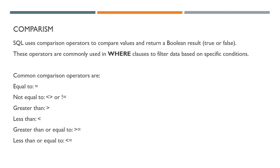We use this to filter based on specific conditions. Some common comparison operators you can actually use are: equal to, not equal (which you can write with either sign), greater than, less than, greater than or equals to, or less than or equals to. These are the basic comparison operators you can use to compare things in your SQL query.